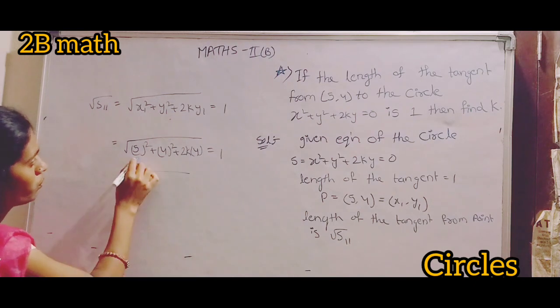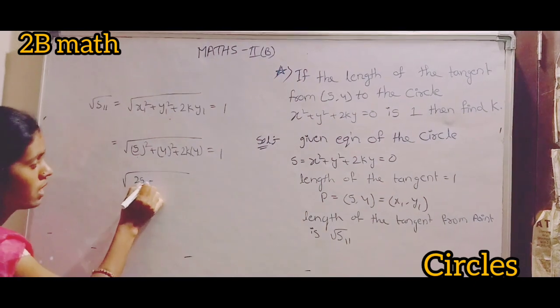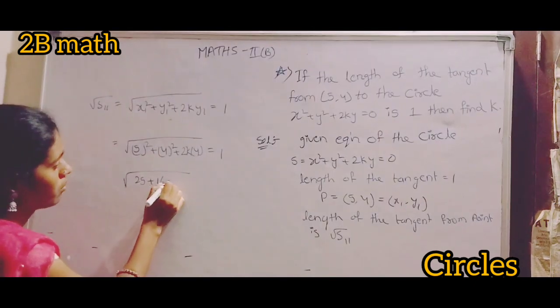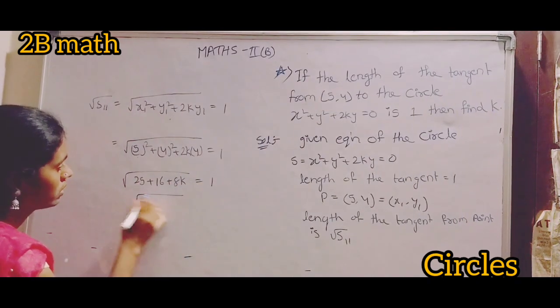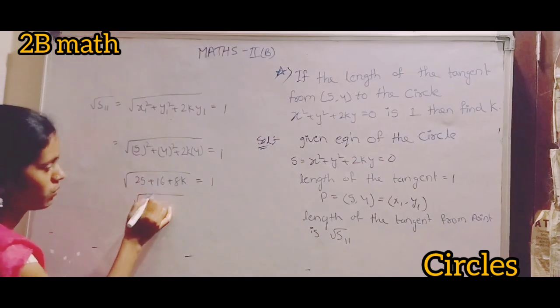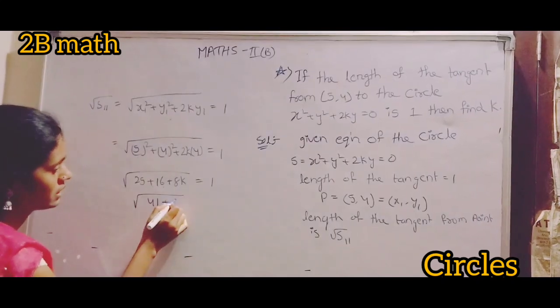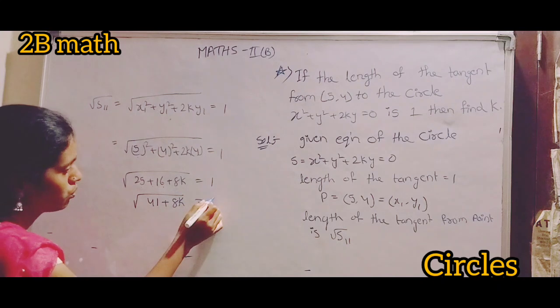Root of 25 + 16 + 8k = 1. Root of 41 + 8k = 1.